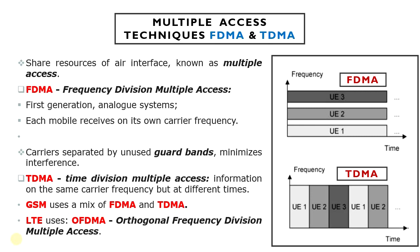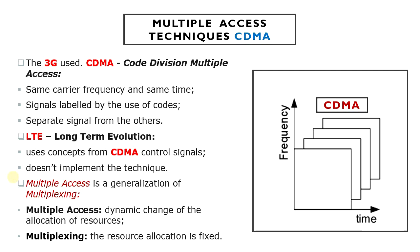LTE uses a mixed technique known as Orthogonal Frequency Division Multiple Access, or OFDMA, which will be covered in the next course. The third generation communication systems use a different technique altogether, known as Code Division Multiple Access, or CDMA. In this technique, mobiles receive on the same carrier frequency and at the same time, but the signals are labeled by the use of codes, which allows a mobile to separate its own signal from those of the others.